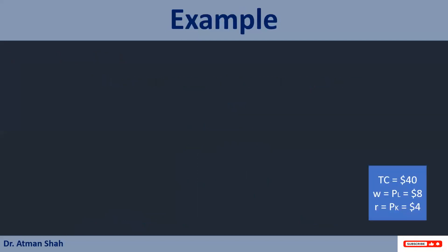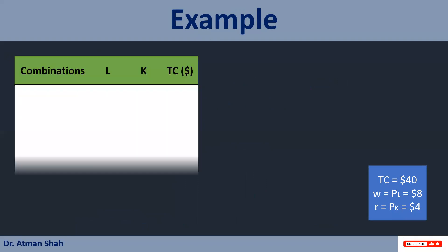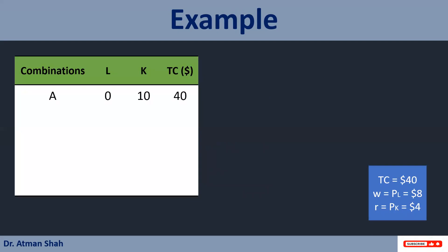Let's take this example. Suppose total cost is $40, price of labor that is wage rate is $8, and rate of interest is $4. See this table. Combination A says that there is no labor unit. So producer can purchase 10 units of capital because price of capital is $4 and total cost is $40.